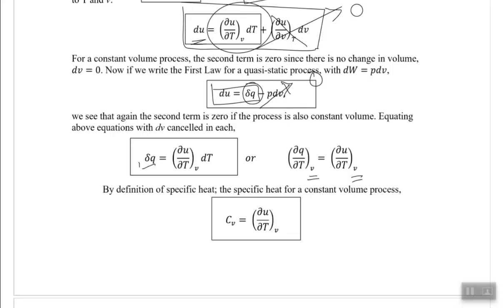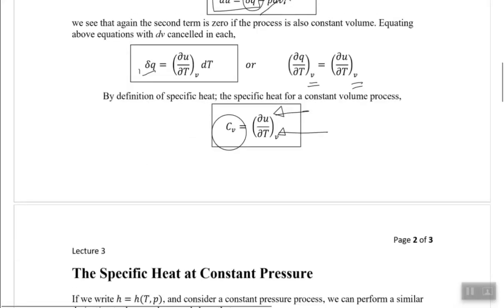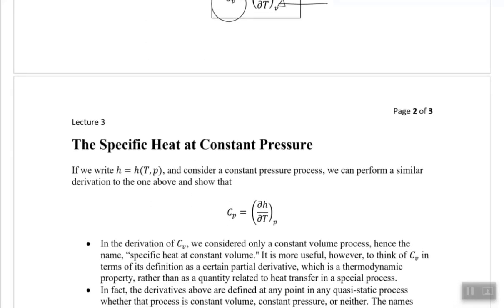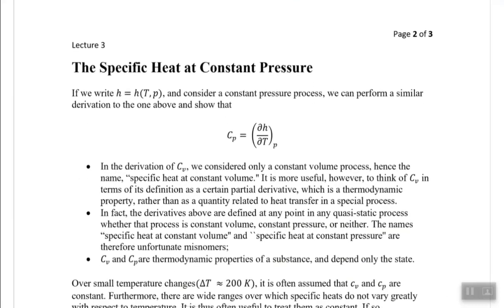Looking at this equation again — internal energy is a state function and temperature is a state function. Any state function differentiated with respect to another state function is again a state function. So from this equation, CV is a state function rather than a path function. Moving on to specific heat at constant pressure: using enthalpy as a function of temperature and following similar steps, CP = (∂H/∂T) at constant pressure.